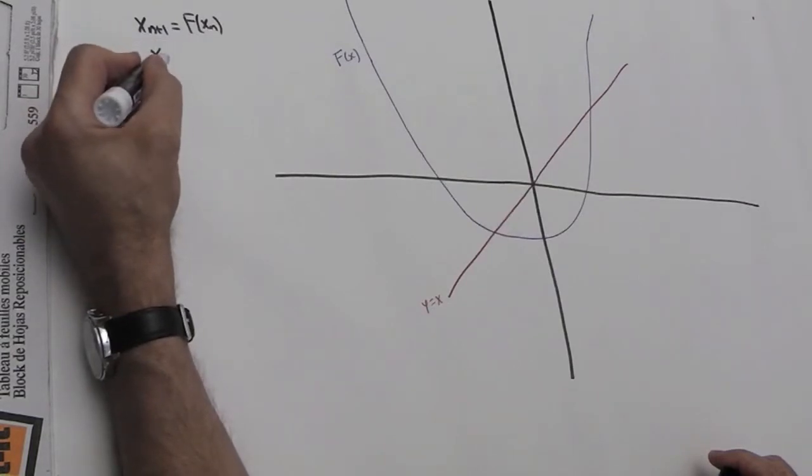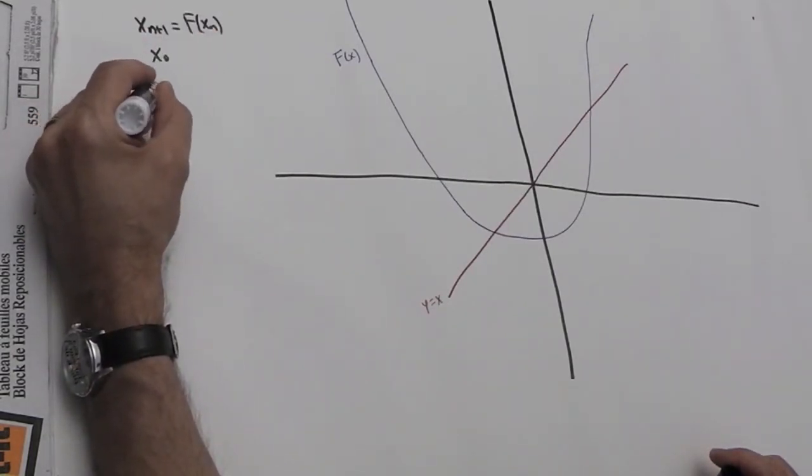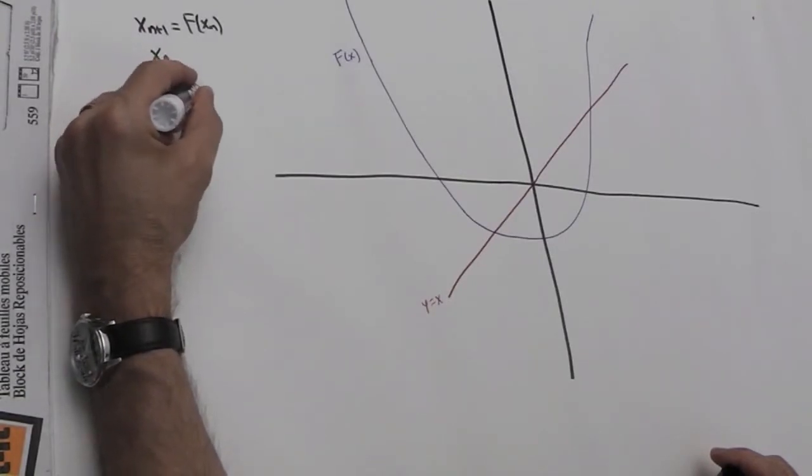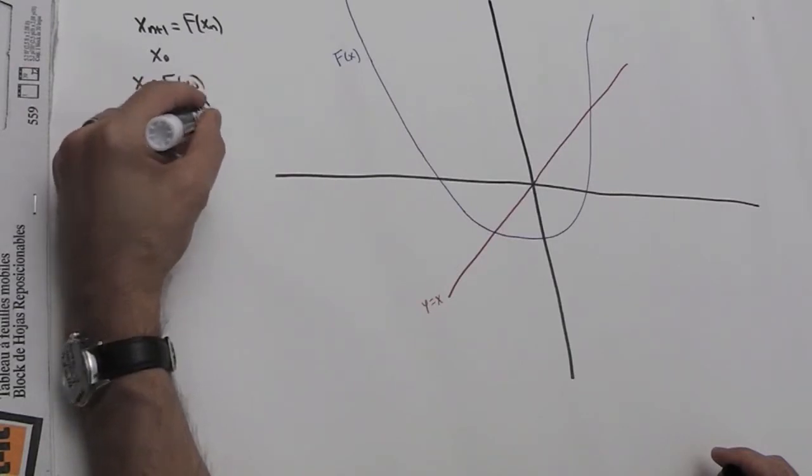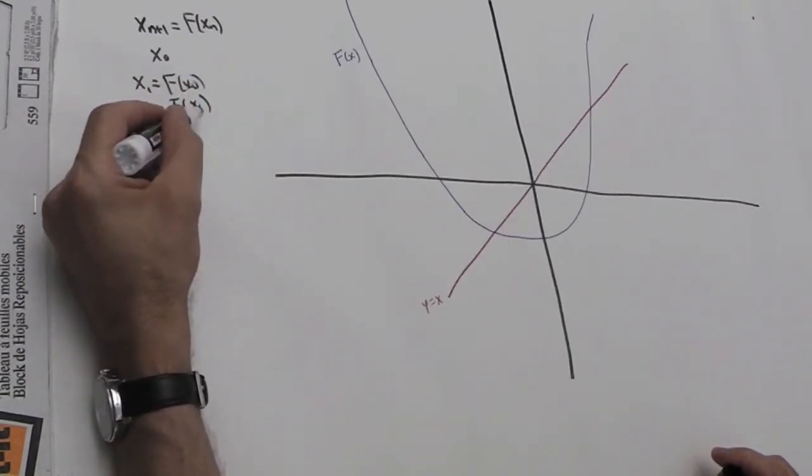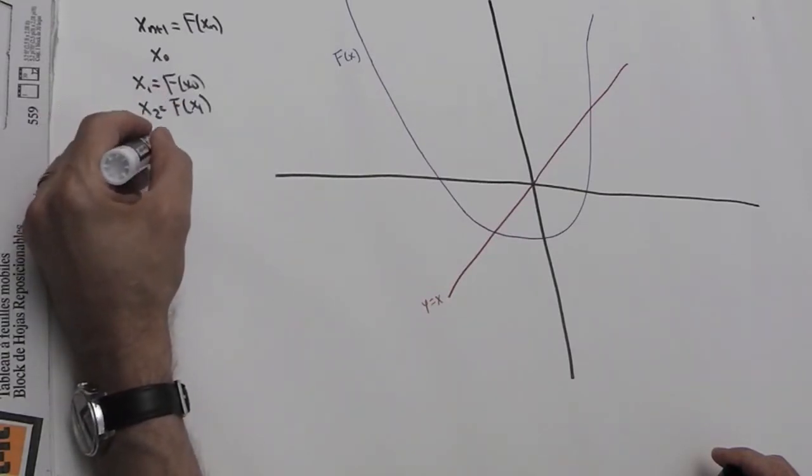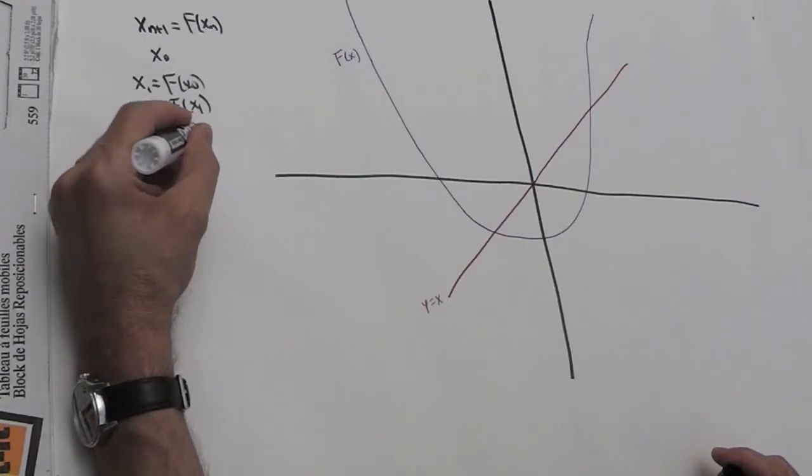We plug x_0 into f to get x_1 = f(x_0), and then x_2 = f(x_1). Basically, we have to plug the output of f back into its input: x_3 = f(x_2), and so on. The cobweb plot is a way of doing that graphically. Let's pick a few x_0s and see how it works for the cobweb plot.